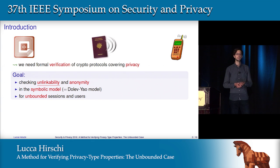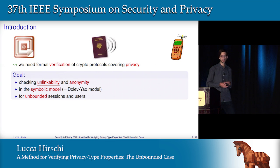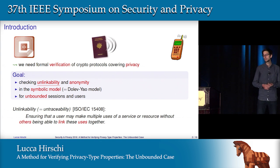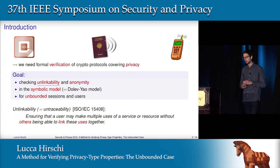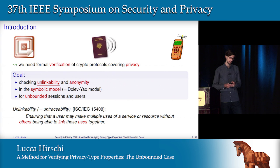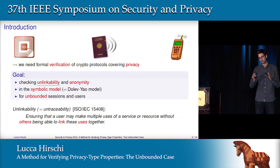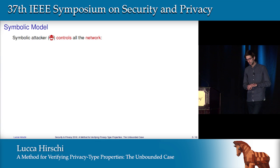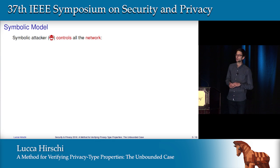We'd like to check unlinkability and anonymity in the symbolic model for an unbounded number of sessions and users. Intuitively, a system ensures unlinkability when a user may make multiple uses of it without others being able to link these uses together. This work targets both unlinkability and anonymity, but in this talk I will focus on unlinkability. We will work in the symbolic model, so I will recall its main features.